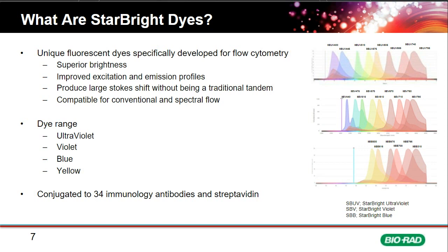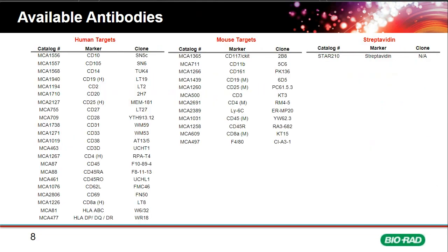These dyes are conjugated to 34 immunology antibodies for human and mouse, plus streptavidin labels. We have 22 human targets, 12 mouse targets, and streptavidin available across all launched StarBright dyes. Today I'll focus on our new range of StarBright ultraviolet dyes.